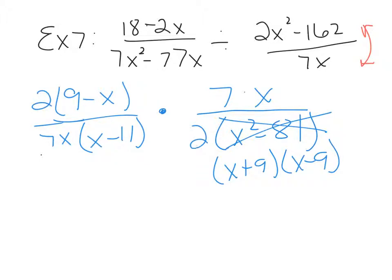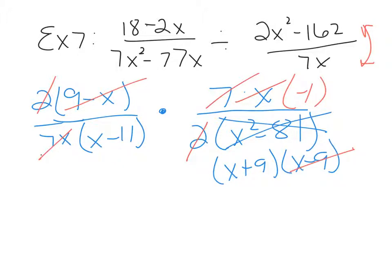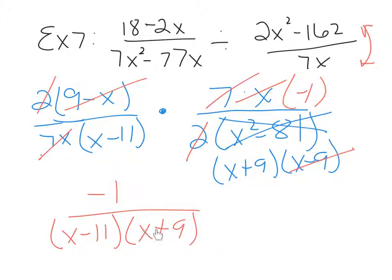Now we do some canceling. The 2s cancel, and 7 and x cancel with the 7 and x. From section 4.1, 9 minus x and x minus 9 are not the same, but they are opposites. You can cancel opposites, but they don't make 1 — when you cancel opposites, you replace them with negative 1 in the numerator. So across the numerator we only have negative 1, and across the denominator we have x minus 11 and x plus 9. Depending on your teacher, they may want you to multiply this out, but I prefer factored form.